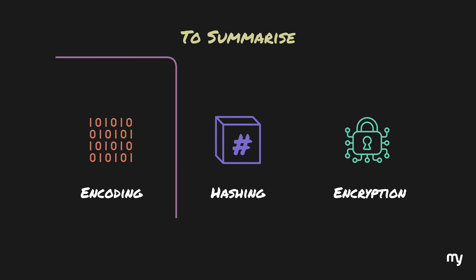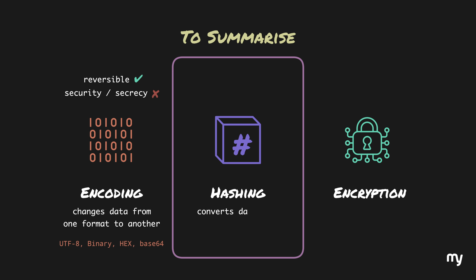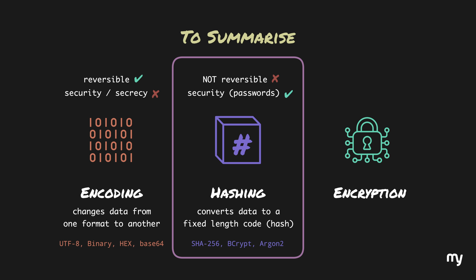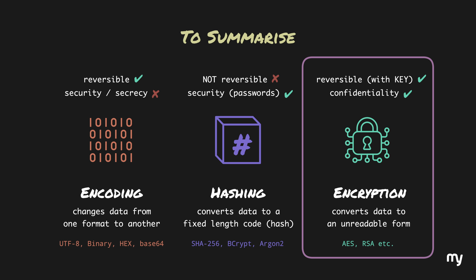To put it all together: encoding is like translating data into another format so computers can store or transmit it properly. It's not about secrecy, it's about structure and readability, and yes, it is completely reversible. Some examples are UTF-8, binary, hexadecimal, and base64. Hashing takes your data and runs it through a special formula to create a unique fixed-length code — this code doesn't reveal the original data and you cannot convert it back, making it perfect for safely storing passwords or checking if a file has been tampered with. Encryption is about confidentiality — it transforms your data into something unreadable, but only temporarily, because unlike hashing, encryption is reversible if and only if you have the right key. That's how secure messaging apps like WhatsApp protect your conversations, even from their own servers.